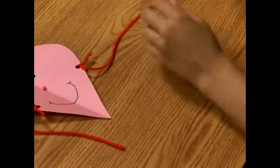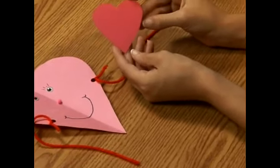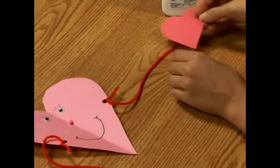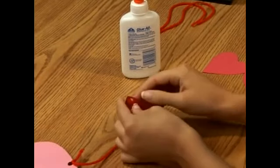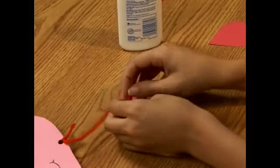Now we need to add the heart hands. I've cut out some construction paper hearts and we'll need to punch a hole in these as well. Now we're going to tie the yarn around this side.